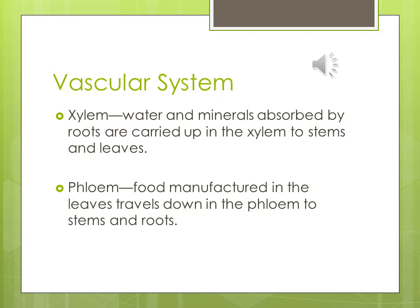Vascular system: xylem — water and minerals are absorbed by the roots and carried up in the xylem to the stems and leaves. Phloem — food manufactured in the leaves travels down in the phloem to the stems and roots. You need to know these definitions.